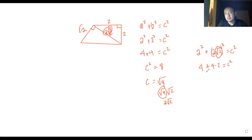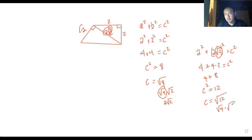So by order of operations it's eight plus four, which means c squared equals 12, and c equals the square root of 12. We can take out a four, so it's four times three — and that gives us two radical three. So this new hypotenuse is two radical three.